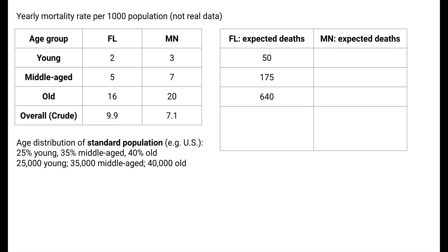With the standard population, we can compute the expected number of deaths in each age category for both Florida and Minnesota. Starting with Florida: the yearly mortality rate in the young is 2 per 1,000 population, so with 25,000 young people, the expected number of deaths in this age group is 50. The yearly mortality rate in the middle-aged is 5 per 1,000 population, so with 35,000 middle-aged people, the expected number of deaths in this age group is 175. Finally, we can do the same for the old age group to get 640 expected deaths.